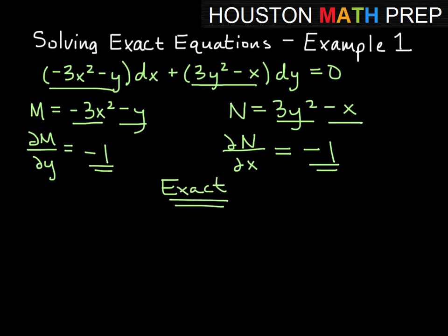So we can use the steps to solve it, finding the potential function. We need to integrate M in terms of x. So if we do that, the first term becomes, so we integrate negative 3x squared in terms of x, we get negative x cubed.